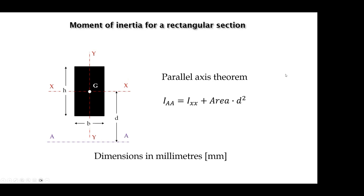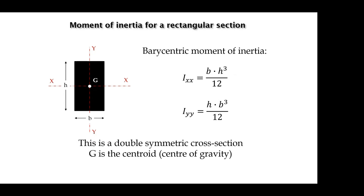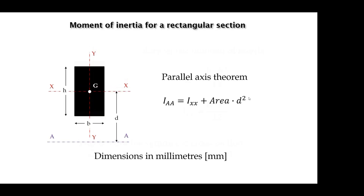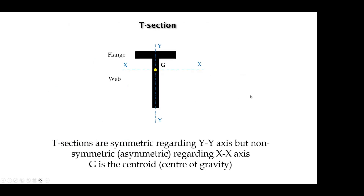The other thing you need to know is the parallel axis theorem. The moments of inertia we calculated are centroidal — regarding axes passing through the centroid. But sometimes it's necessary to calculate the moment of inertia regarding another axis, such as axis AA parallel to axis XX. The theorem states that the moment of inertia regarding any parallel axis AA equals the centroidal moment of inertia plus the area of the cross-section multiplied by the square of the distance from the centroid to that parallel axis. This theorem is very useful for calculating the moment of inertia of a T-section.